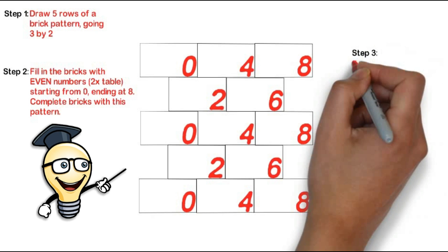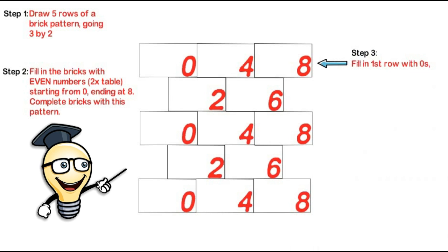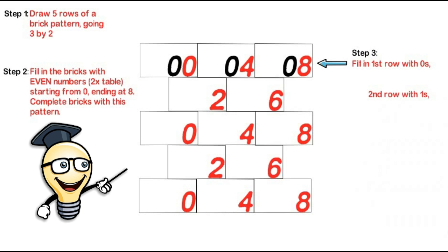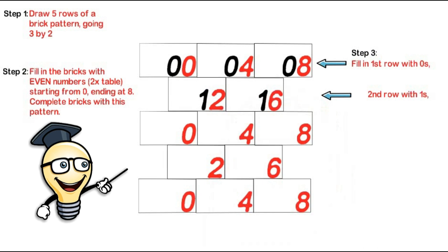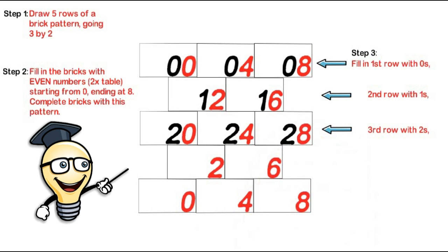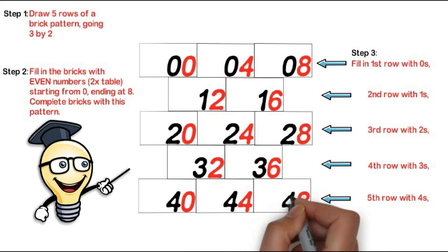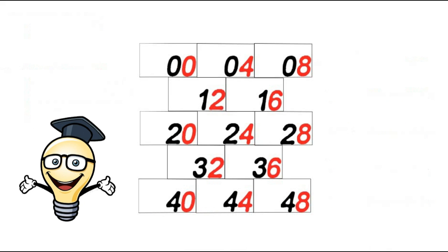Then step 3, we fill in the top row with 0s. We fill in the second row with 1s. The third row with 2s. The fourth row with 3s. And the fifth row with 4s. And if you haven't noticed already, there's the 4x table.